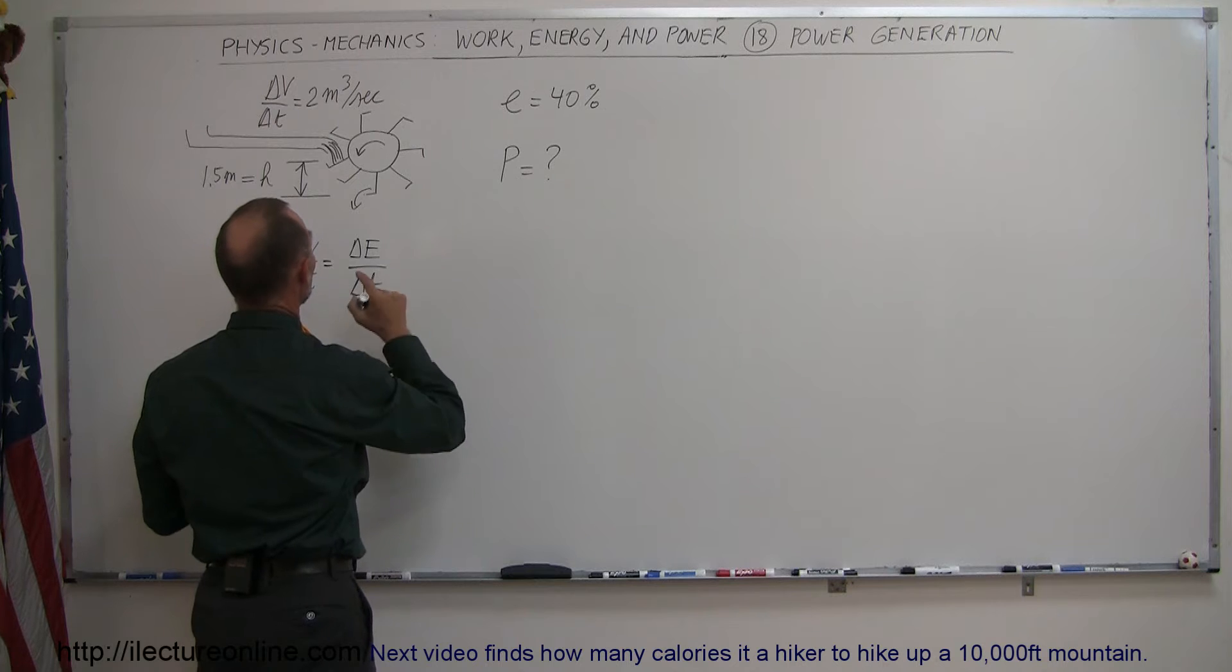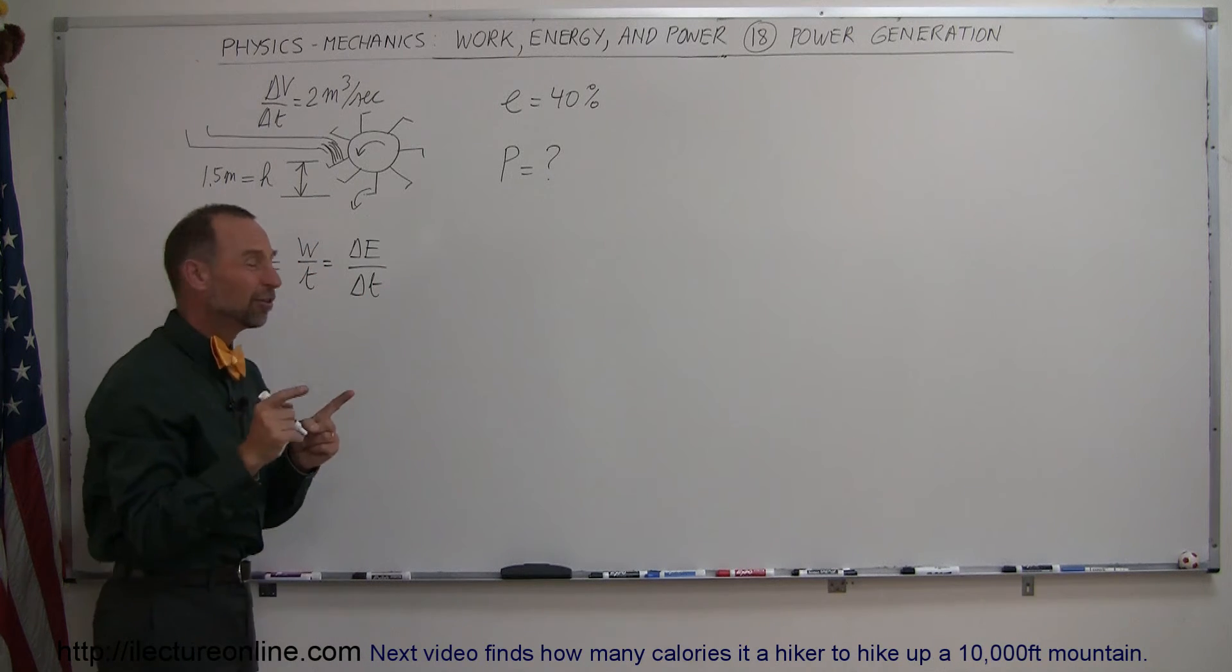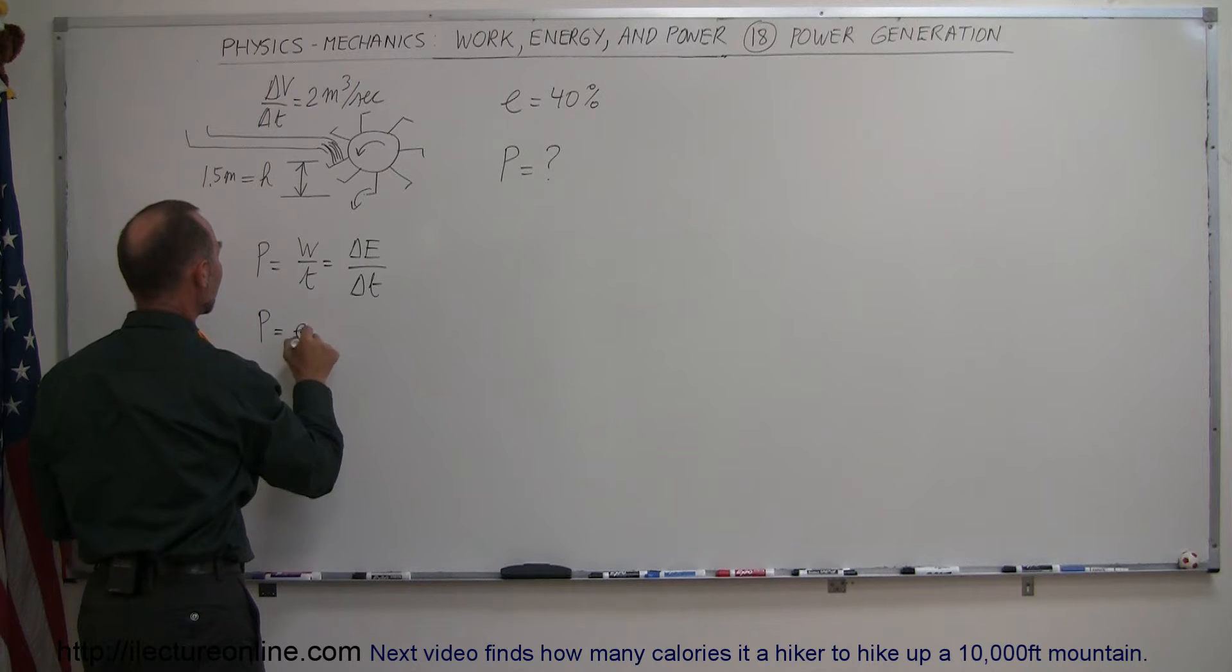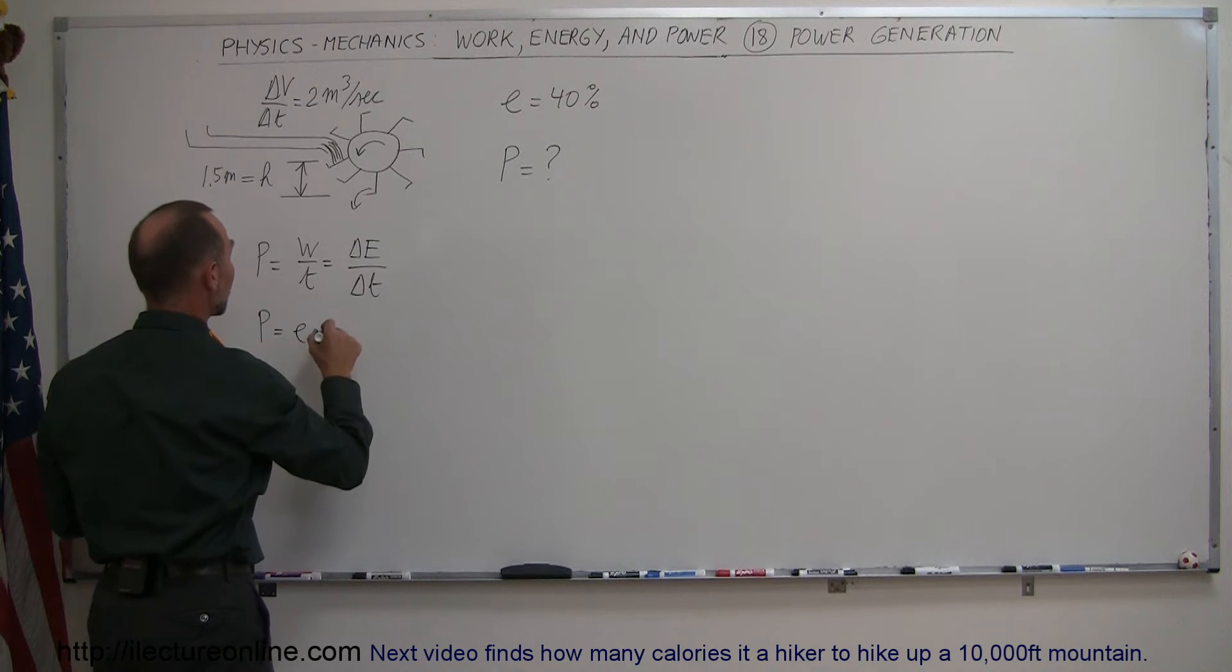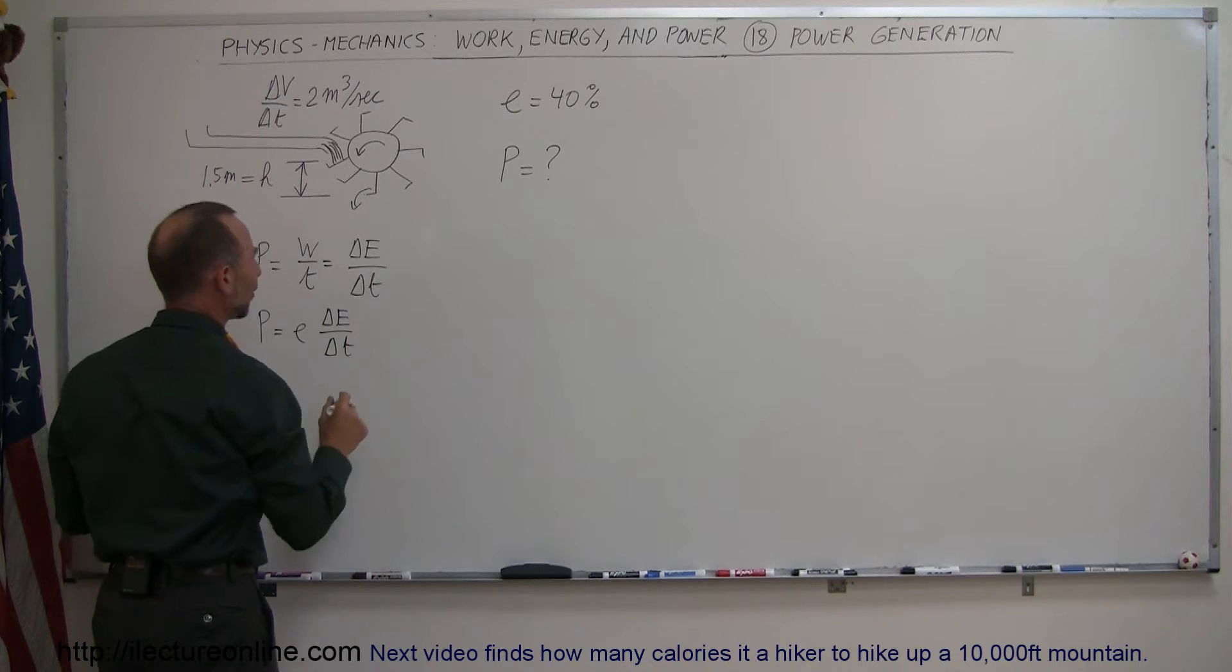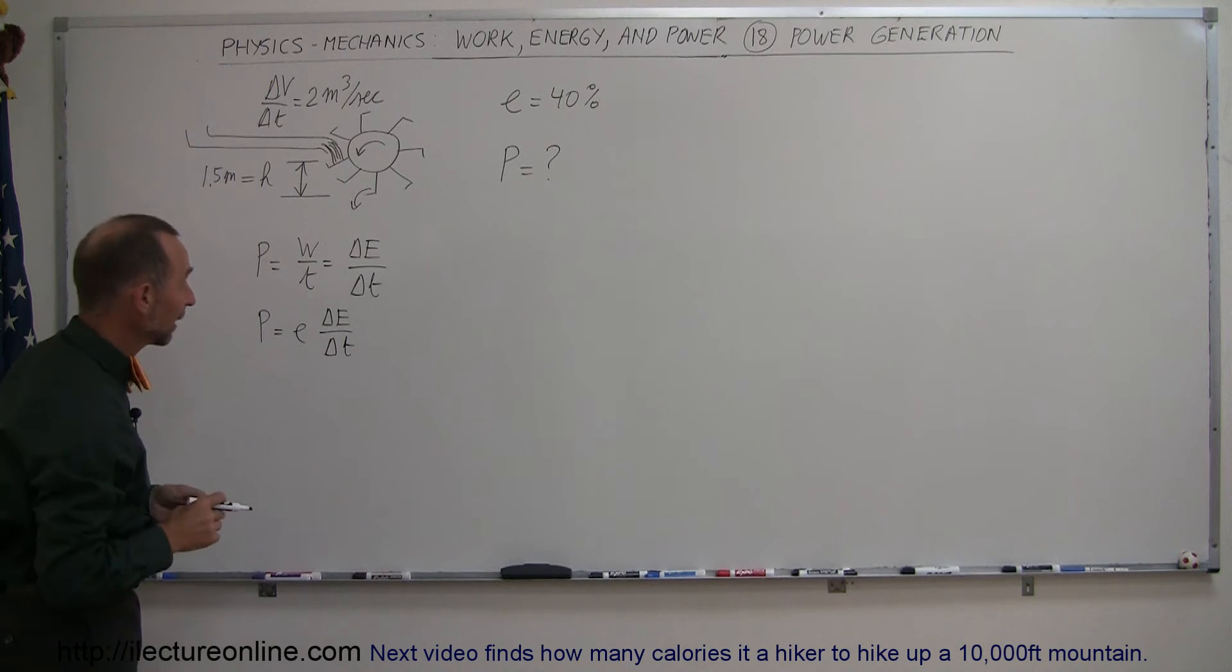We're only 40% efficient. So the power generated is equal to the efficiency of the operation, 40%, times the change in the energy over time. So we don't get quite everything out of it that we would like.